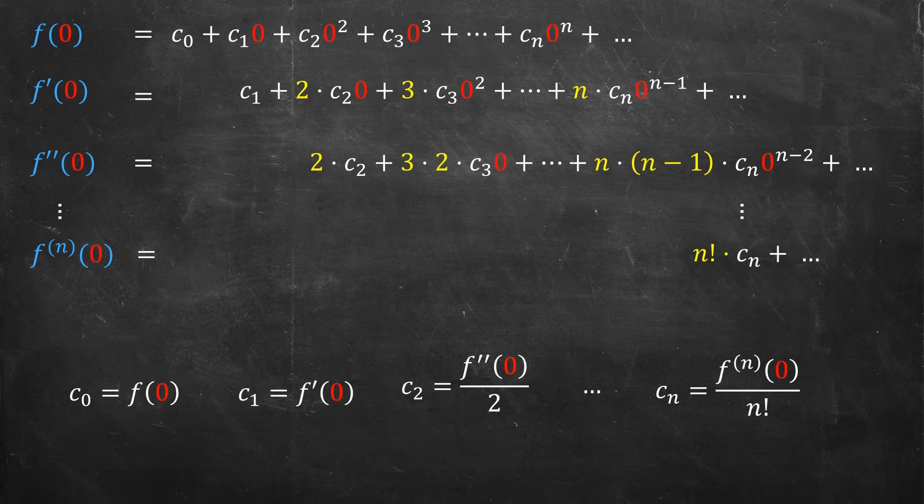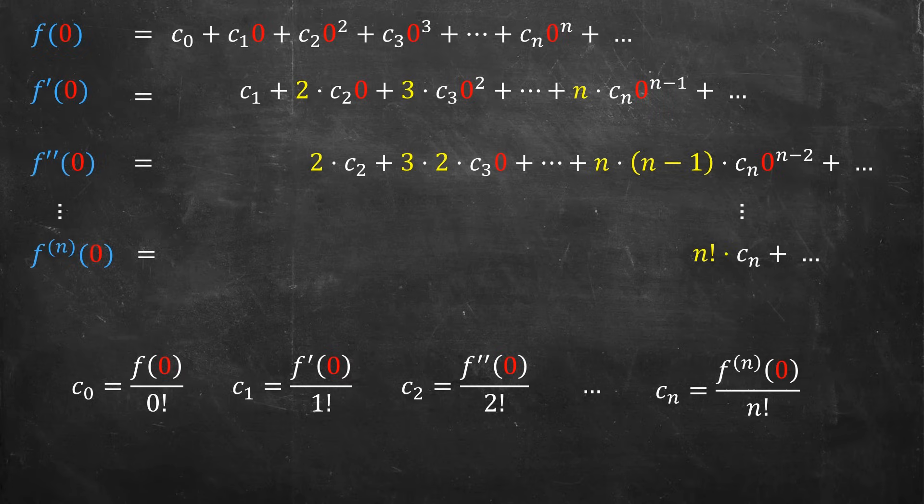By the way, these first few terms I can interpret in the language of factorials. Zero factorial is just one. One factorial is just one. Two factorial is just two. So I can replace those coefficients in the denominator. And so it's quite compatible with a generic form. You take n derivatives and divide it by n factorial.